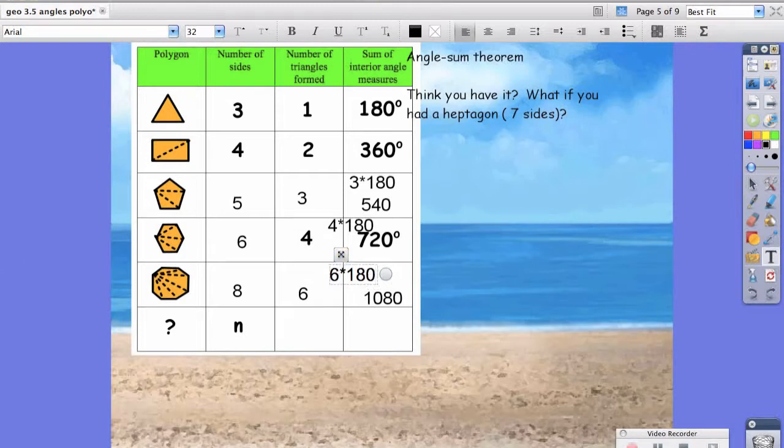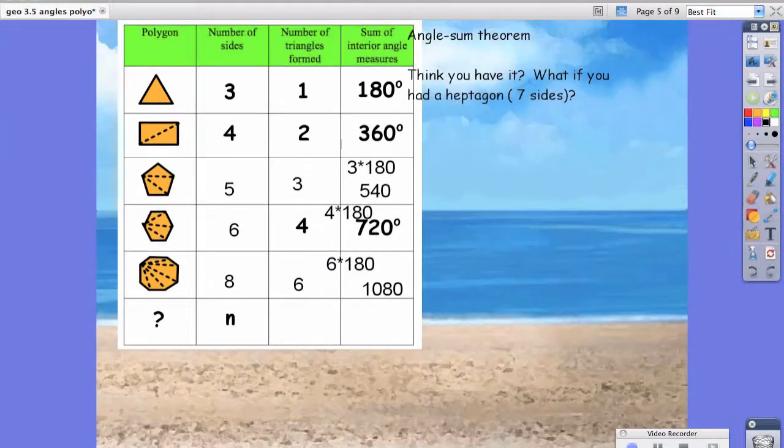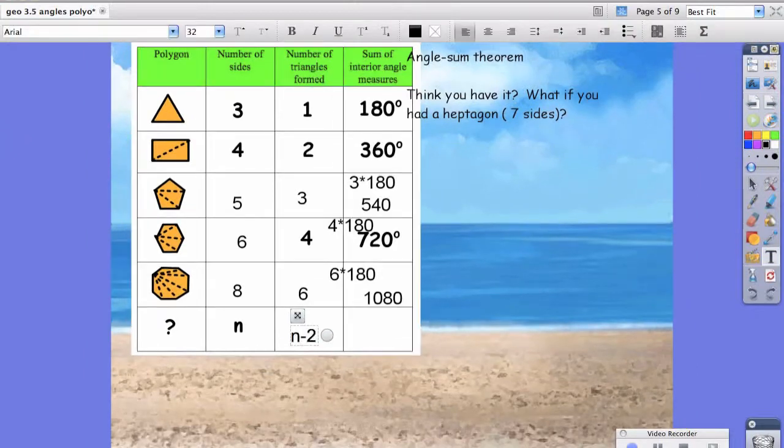Hopefully by now you should have sensed the pattern. If we have some random polygon whose number of sides we don't know, how would we figure out the number of triangles? Hopefully you figured out it would be n minus two. The way we'd figure out the sum of interior angles would be to take n minus two and multiply by 180. This is a very powerful equation, which is why we took the time to break it down in terms of this table. Oftentimes you will just be given an equation, but I wanted you to notice that everything in math can usually be broken down in terms of a triangle, like we did here.